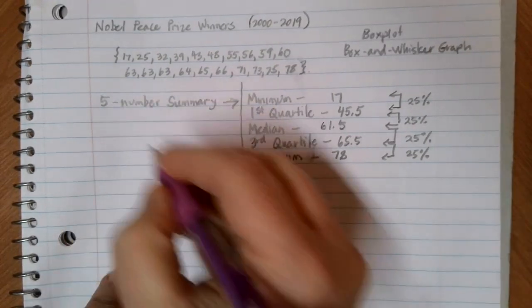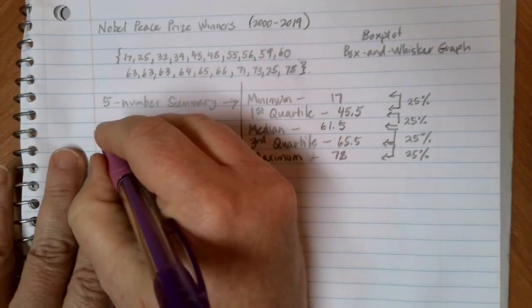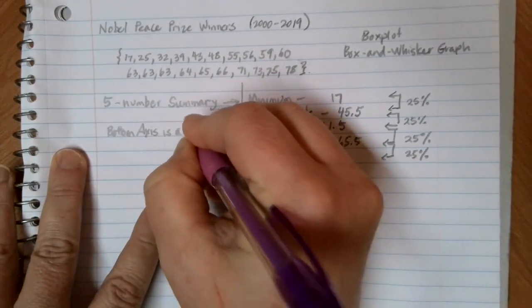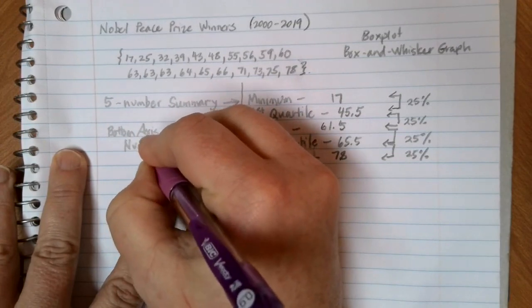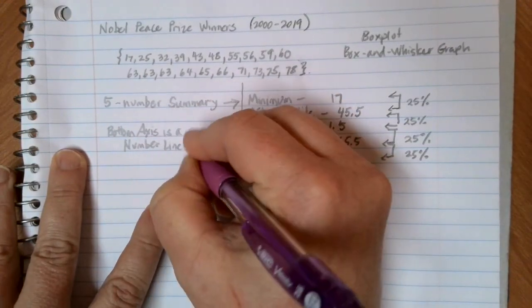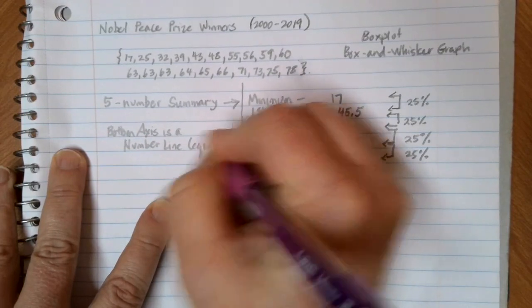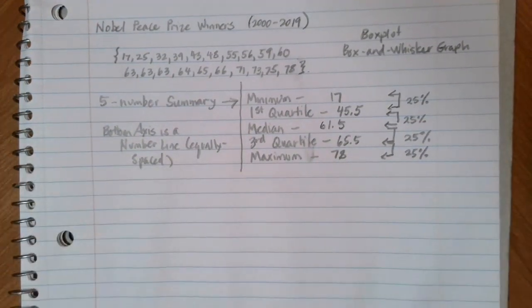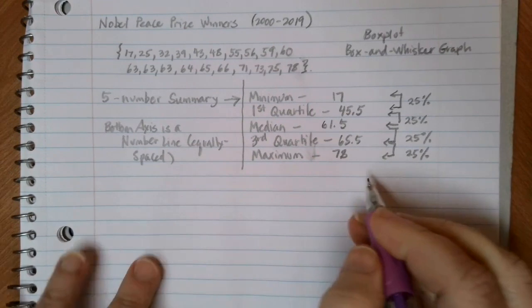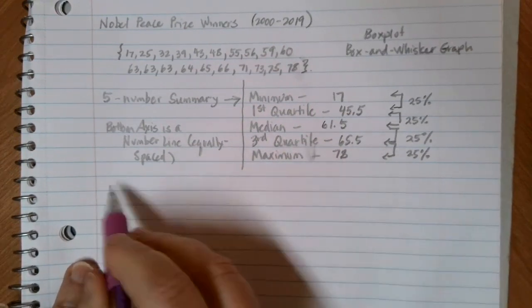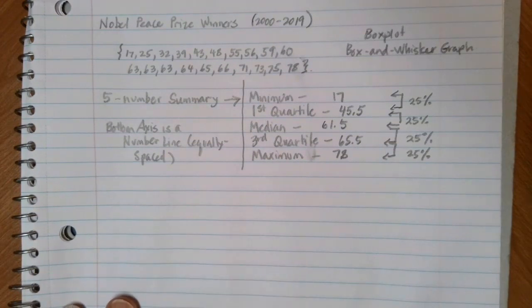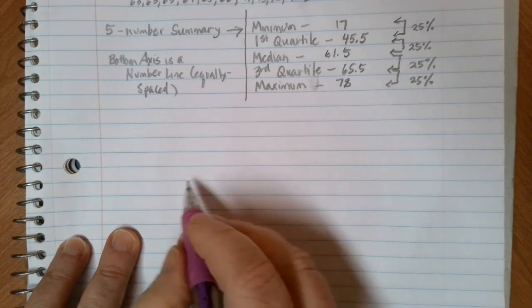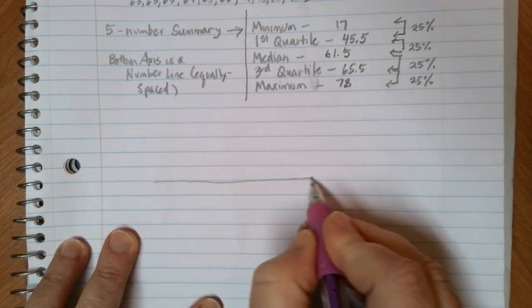When we create a box and whisker plot, just like when we were dealing with histograms, our bottom axis is going to be a number line. It's important that what we have here is equally spaced areas below for our label so that we can actually get a visual representation of how spread out that data all is. For our Nobel Prize winners between 2000 and 2019, we're going to put this five-number summary in in a visual way.